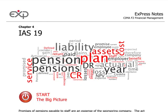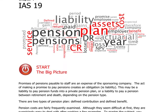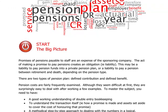Welcome to CIMA F2 Financial Management, Chapter 4, IS19. IS19 is about pension costs, and in all jurisdictions employers promise their staff a pension at the end of their career — from the moment they retire to the moment of their death. There are two types of pension plans you need to be aware of: the defined contribution and defined benefit scheme.